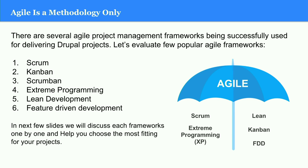Agile is methodological, but you can't work with agile alone because it doesn't give enough specifics. There are several agile project management frameworks used in the Drupal ecosystem. Scrum, Kanban, and Scrumban are popularly used frameworks. Then we have extreme programming, lean development, and feature-driven development. In the next few slides, we will discuss all these frameworks.